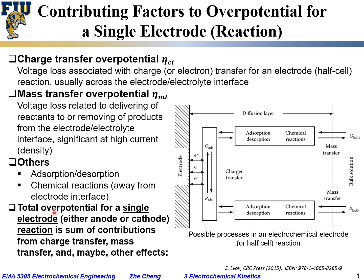In all, the overall or total overpotential for a single electrode reaction — whether it's an anodic or a cathodic half-cell reaction — is always the summation of contributions from all different processes and mechanisms, including charge transfer overpotential, mass transfer overpotential, and possibly other additional overpotentials such as those from adsorption/desorption or additional chemical reactions away from the electrode surface. So: overall μ = μ_ct + μ_mt + any other additional overpotentials.